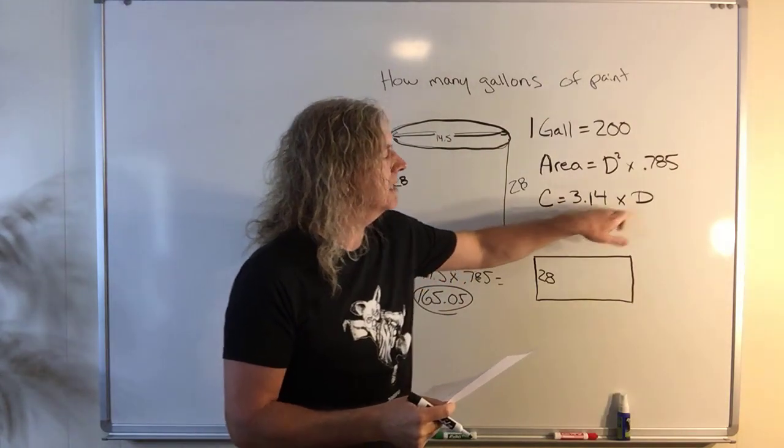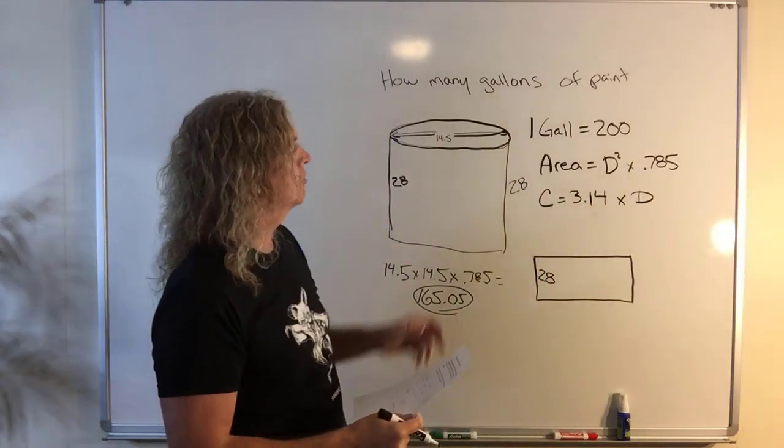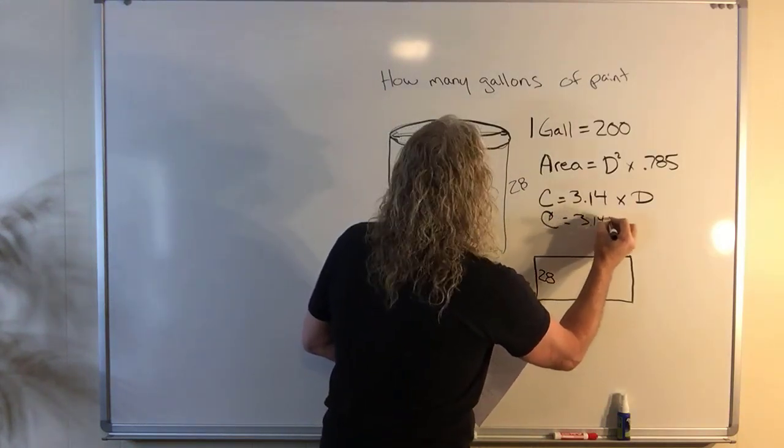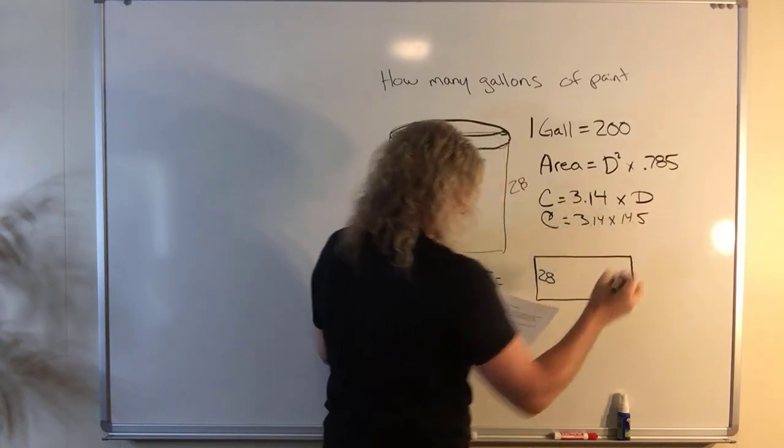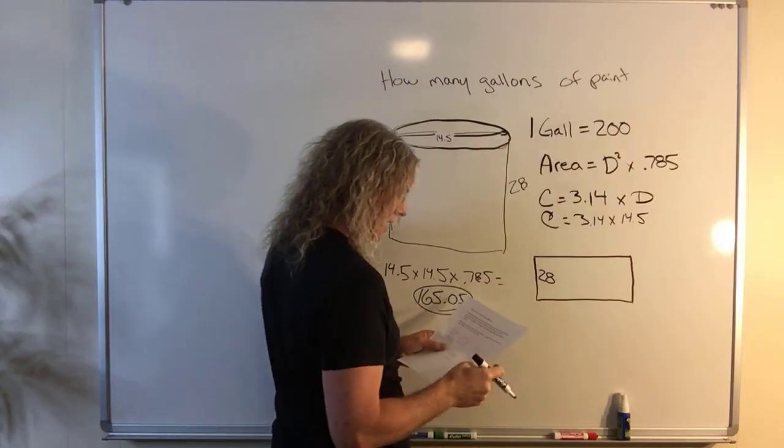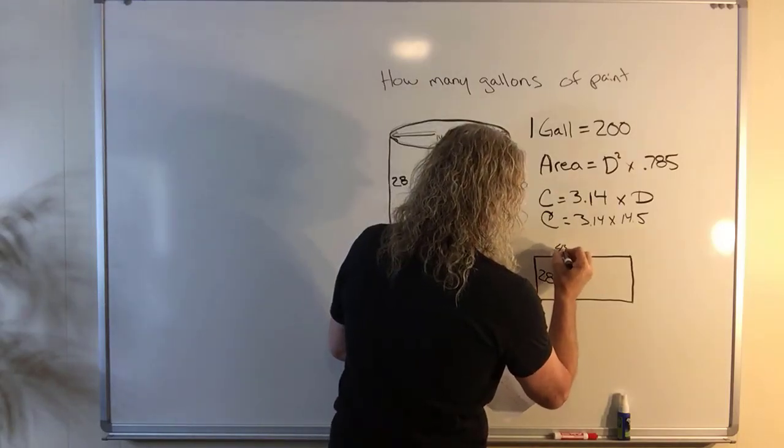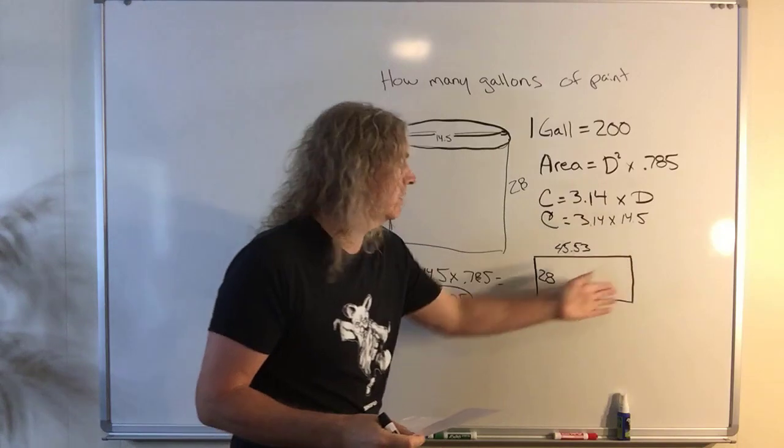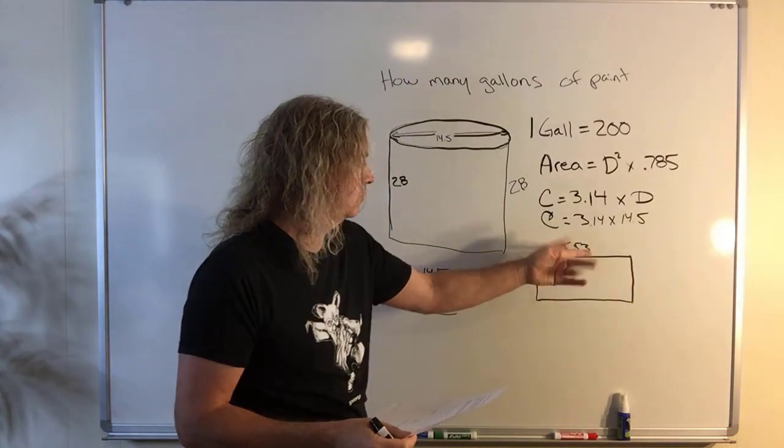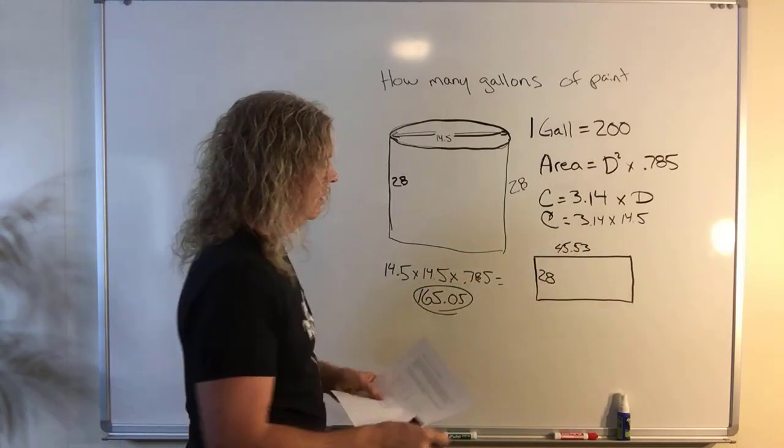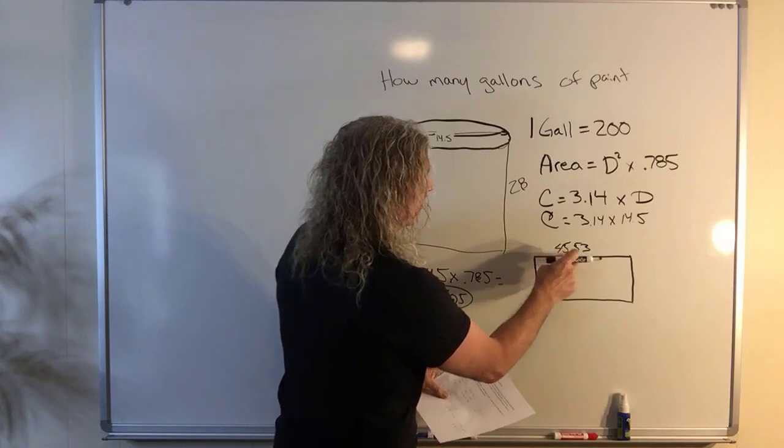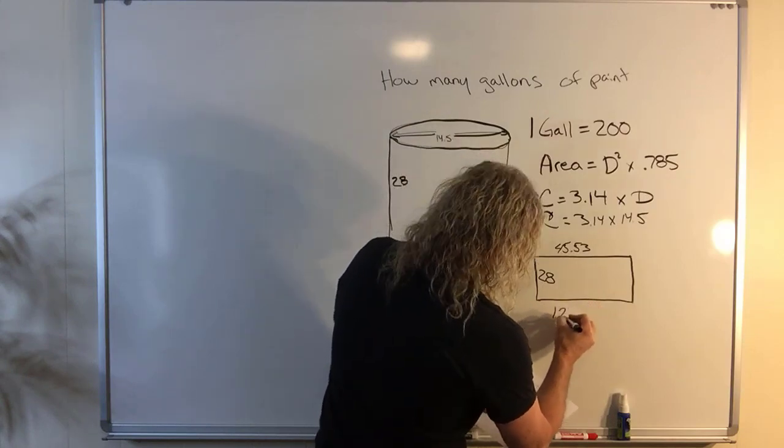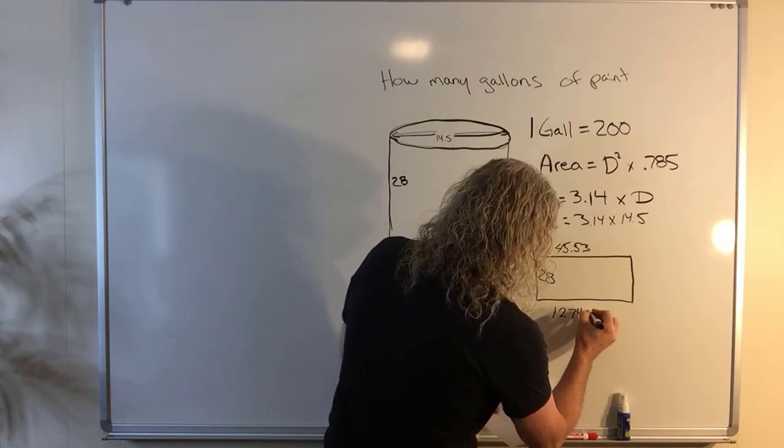We're going to go back to that circle problem and our constant again. Circumference equals pi times diameter. Pi is 3.14. We know diameter is 14.5. So your circumference is going to equal 3.14 times 14.5. And your circumference, the distance around that tank is going to be 45.53 feet. Now the surface area of a rectangle is just length times height, or height times width, whatever you want to call this. We're going to multiply those two sides. So you're going to multiply 28 times 45.53. And what you're going to get is 1,274.84.